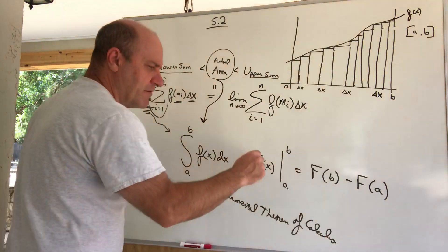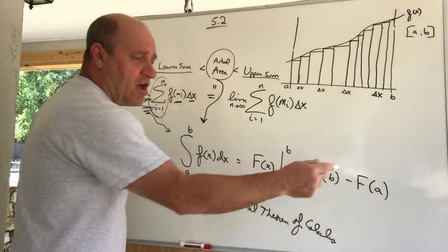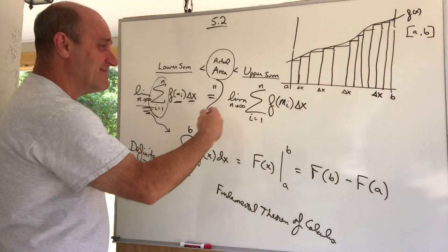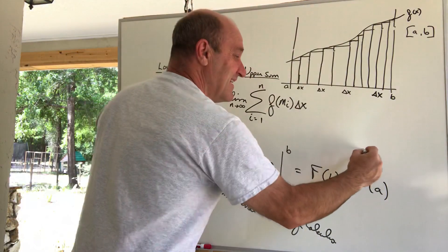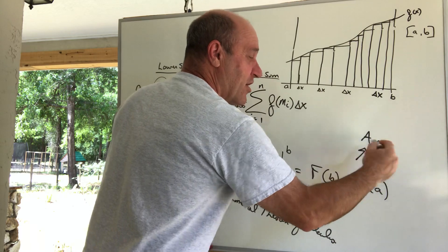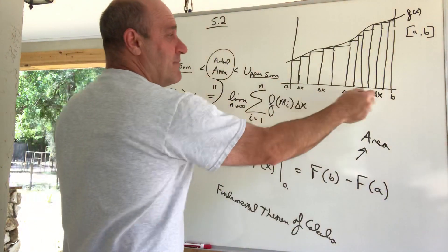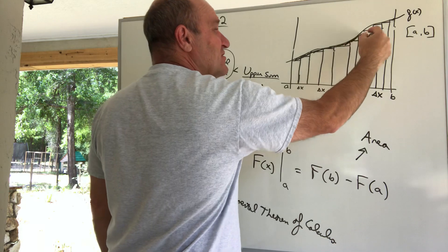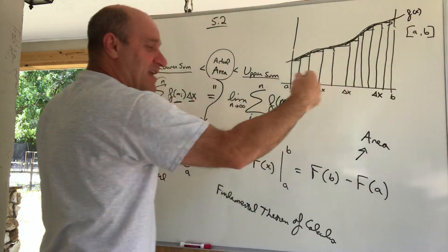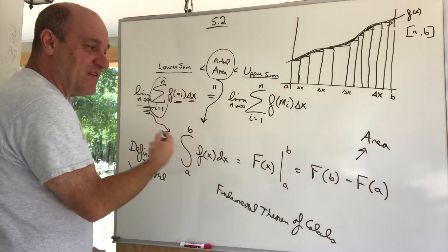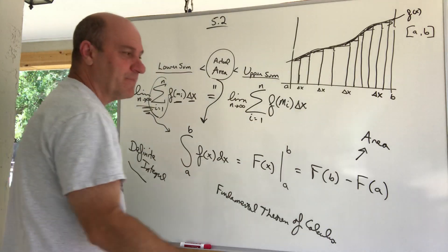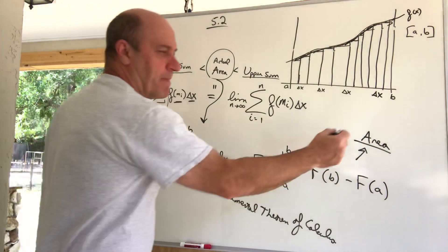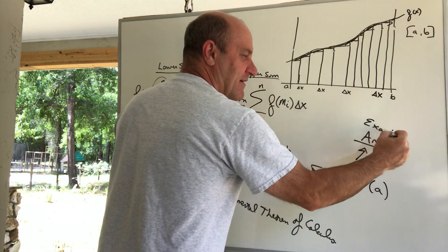You plug in b, you plug in a, and you get a number. What does that number mean? It's the area — the area under the curve from a to b. The actual area. There is no more error. We've taken care of the error by doing an infinite number of rectangles. Exact area.